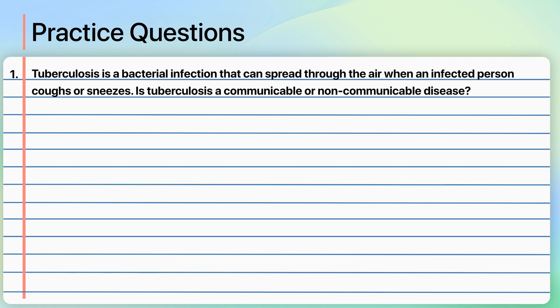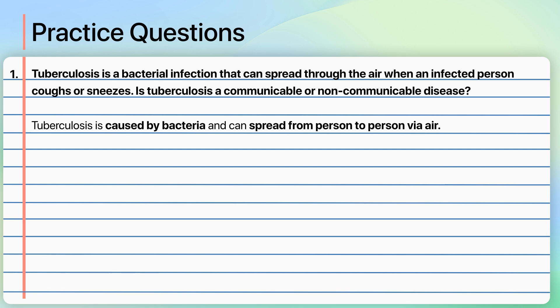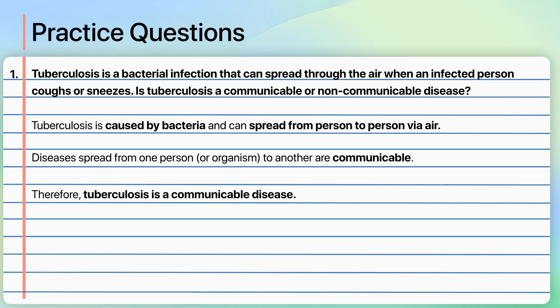Let's work through some questions to solidify our understanding. Tuberculosis is a bacterial infection that can spread through the air when an infected person coughs or sneezes. Is tuberculosis a communicable or non-communicable disease? Tuberculosis is caused by bacteria and can spread from person to person via air. Diseases spread from one person or organism to another are communicable. Therefore, tuberculosis is a communicable disease.